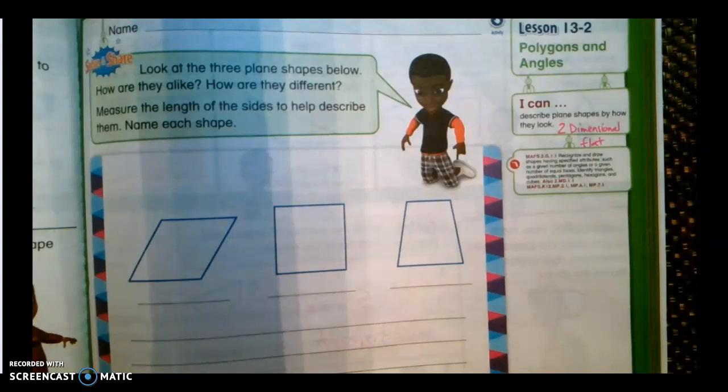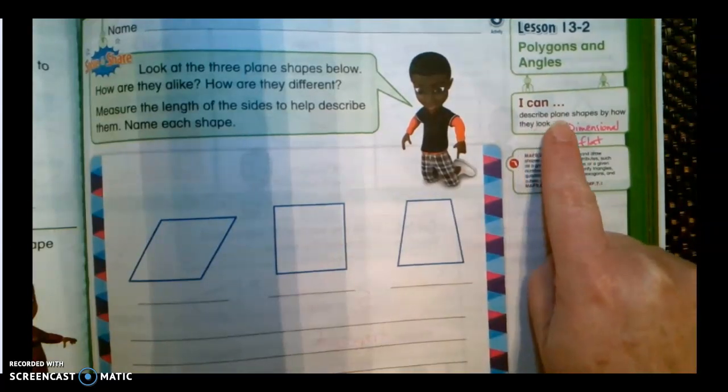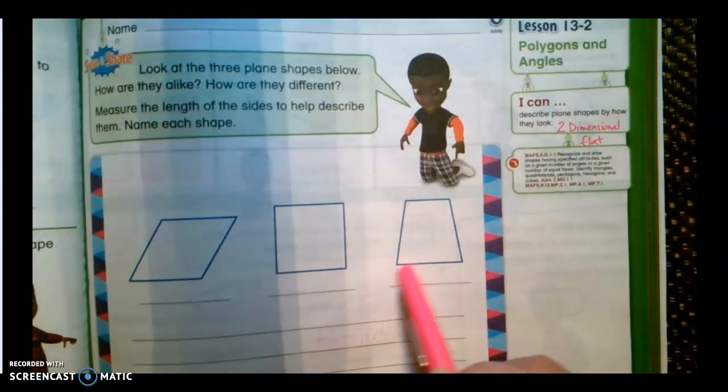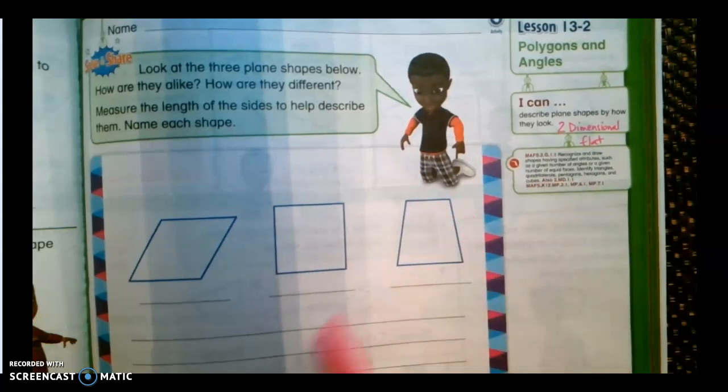So a polygon, again, is a two-dimensional or a plane shape that has at least three sides or three angles and every side has to be straight. So we're only using straight edges on these.